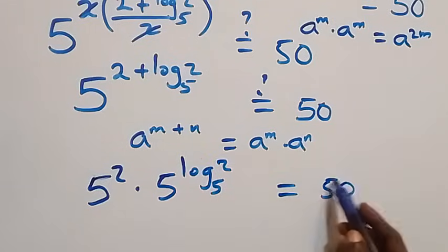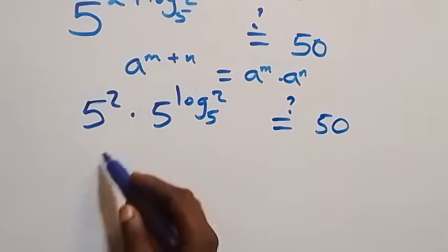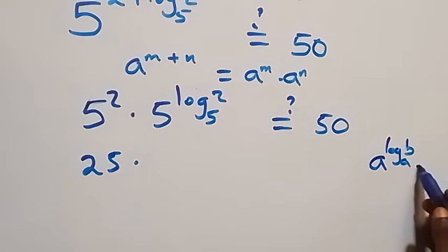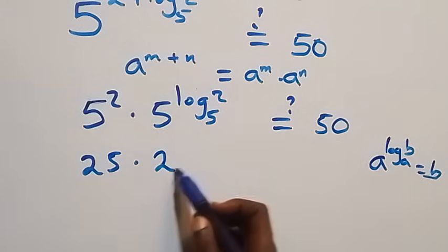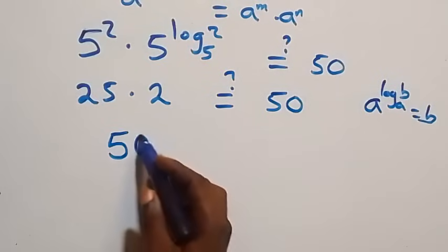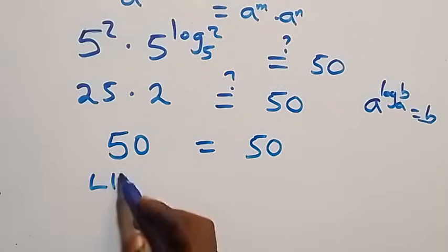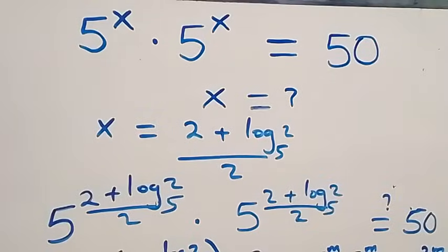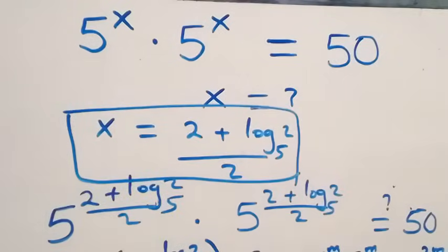So we have 5 squared, which is 25, times 5 raised to power log₅2. By the rule a raised to power log_a(b) equals b, this gives 25 times 2, which equals 50 — equal to 50 on the right-hand side. Left-hand side equals right-hand side, so x equals (2 plus log₅2)/2 satisfies the given problem. Thank you for watching. Subscribe for more videos, turn on your notifications bell, share this video, give it a thumbs up. See you next class, bye for now.